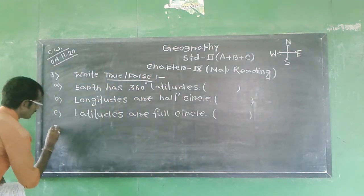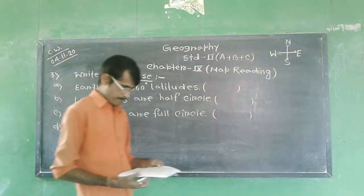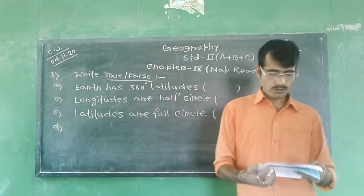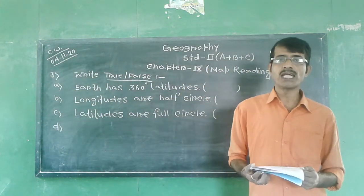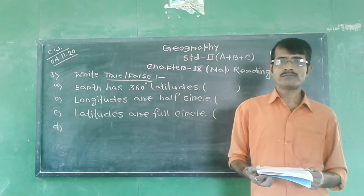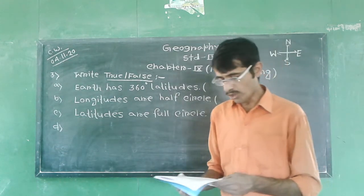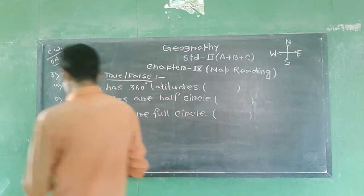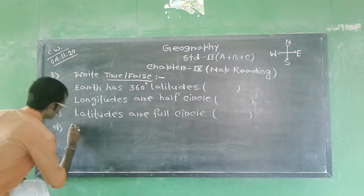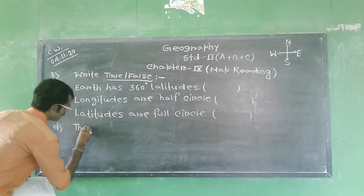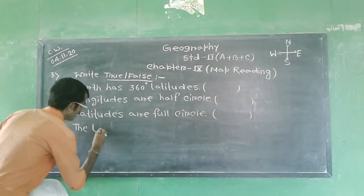And then D. The latitude of equator is 90 degrees. No, it is a false statement.